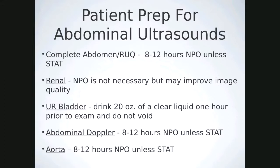For patient prep for abdominal scans — complete abdomen or right upper quadrant — a minimum of eight hours of fasting is necessary, with an 8–12 hour NPO window, unless ordered stat for the ER. For renal, NPO is not technically necessary, but it's good practice to have patients be well-hydrated by drinking plenty of water. This helps visualize the inferior pole of the kidney without bowel gas, and the kidneys will be nicely hydrated and easier to scan.